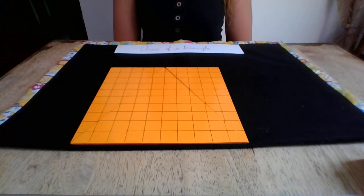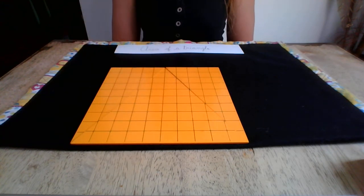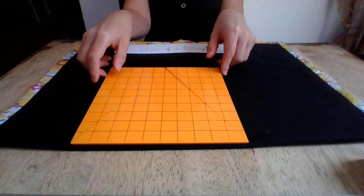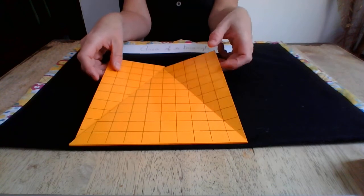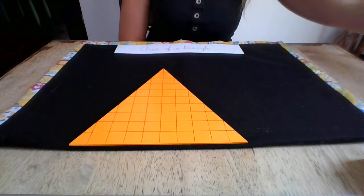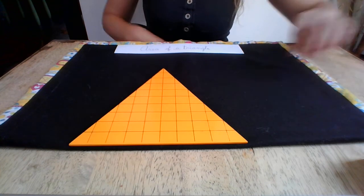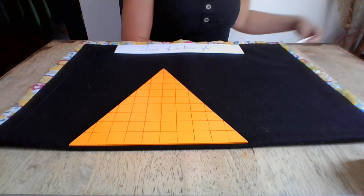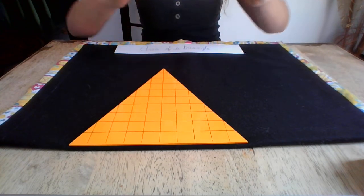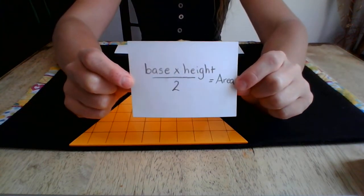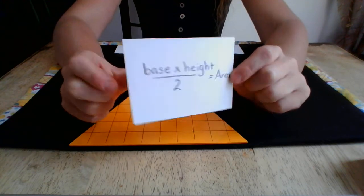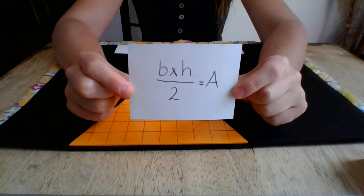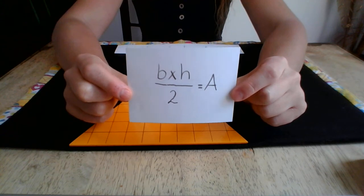But remember, my square has double the area of my triangle, so I have to take those 100 square units and divide them by 2. 100 divided by 2 is 50, so the area of my triangle is 50 square units. So the first way to find the area of a triangle is: base multiplied by height, divided by 2, gives us the area of a triangle.